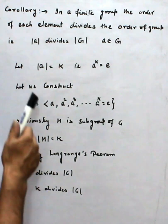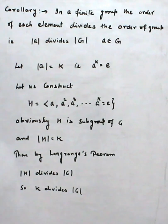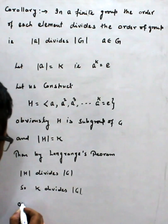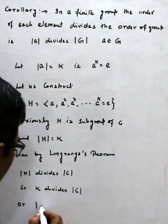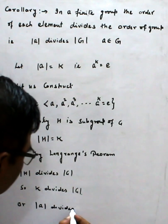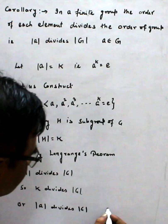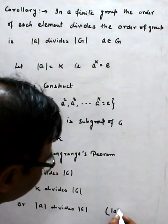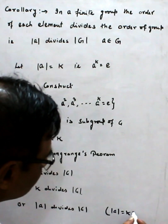This is a simple proof that order of A divides order of G, as order of A is equal to K.